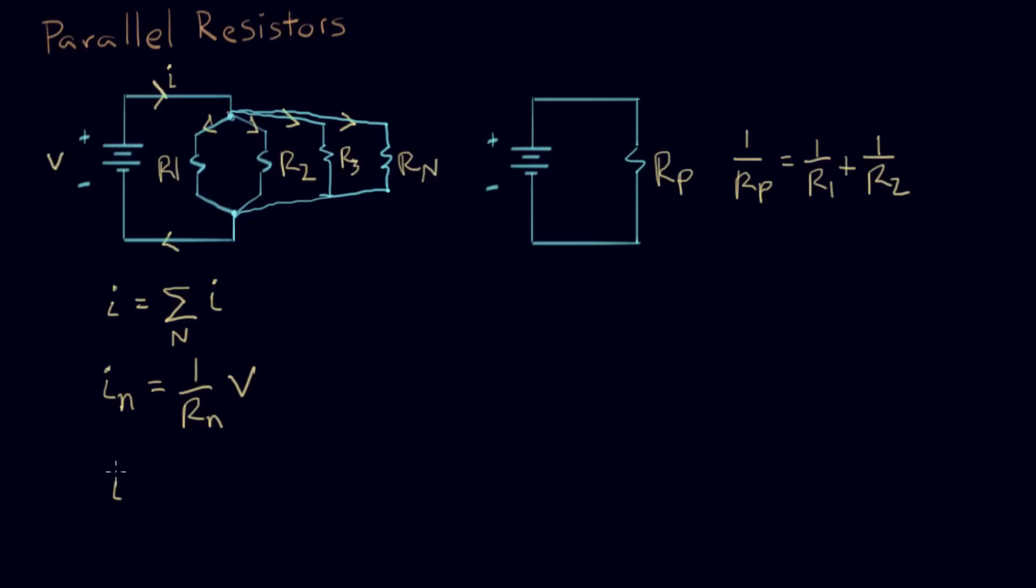We get the big I, the overall I, is equal to voltage times a big expression: one over R1 plus one over R2 plus one over R3 plus as many resistors as we have, one over Rn, like that.